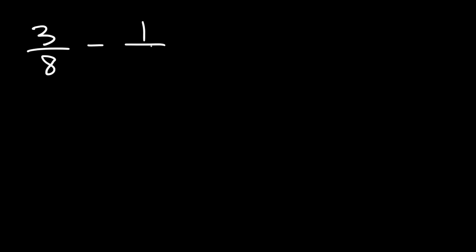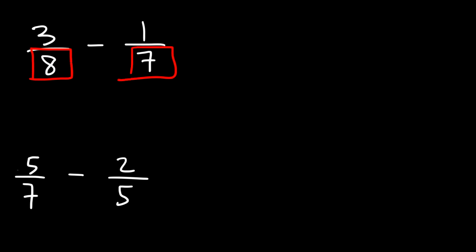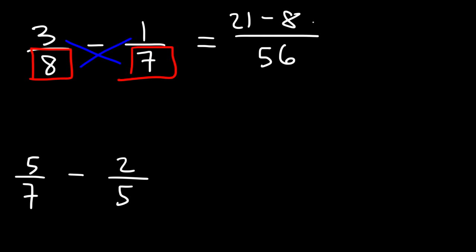Now it's your turn. Go ahead and subtract these two fractions: 3 over 8 minus 1 over 7, and also 5 over 7 minus 2 over 5. Starting with the first example, let's multiply 8 by 7. 8 times 7 is 56. Then cross multiply: 3 times 7 is 21, and 8 times negative 1 is negative 8. 21 minus 8 is 13, so the answer to the first problem is 13 over 56.